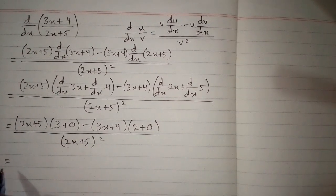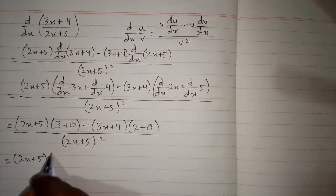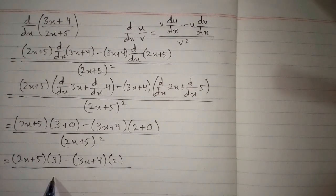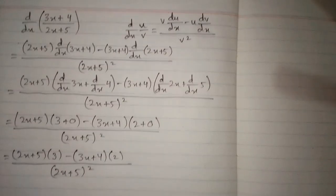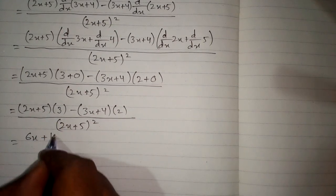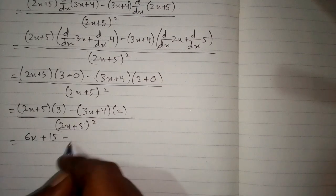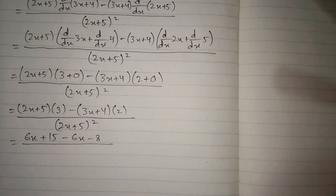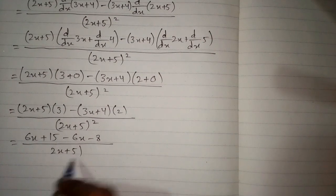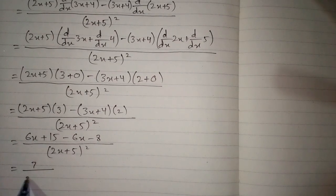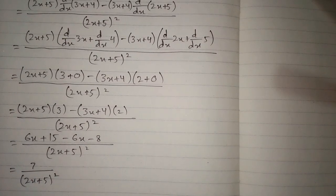Now 3 plus 0 is 3, and 2 plus 0 is 2. So we have (2x + 5) times 3 minus (3x + 4) times 2. That gives 6x + 15 minus 6x minus 8. So 6x minus 6x is 0, and 15 minus 8 is 7. So we have 7 upon (2x + 5) whole square, and this is the answer.